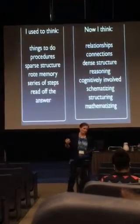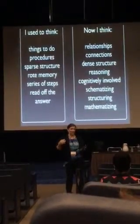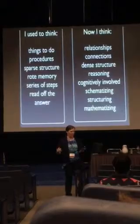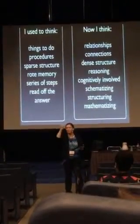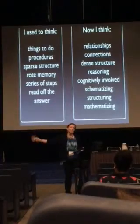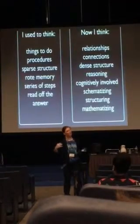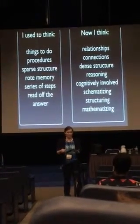I want that at all costs. I don't want kids to just sort of read off the answer when they get to the end. I want them cognitively involved. So I now think that mathematics is much more about relationships and connections. I want dense brain structure. I want to reason. Think about the process standards. I want to be reasoning, cognitively involved all the time, schematizing it, building schema in my head. I'm not memorizing someone else's schema. That's sparse. I want to build my own schema. Structuring, in Kathy Fosnot's word, I want to be mathematizing.